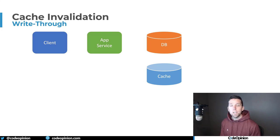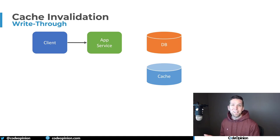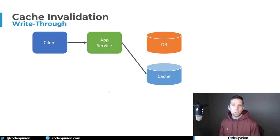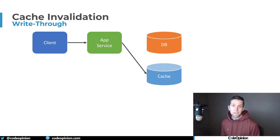The first strategy is called write-through. The way this works is that we have our client application make a request to our application or service. When it needs to do some type of state transition and persist something to our database, that request occurs. But then immediately after we're done with that request, we go and update our cache — either updating the existing entry or adding something new. The idea is that immediately after we write our state to our primary database, we update the cache.